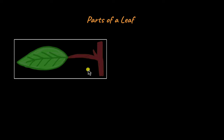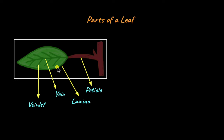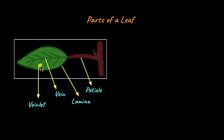This is how a typical leaf looks like. The main green part of the leaf is called the lamina or the leaf blade. This is green in colour and is the site of photosynthesis. The lamina is held up by the petiole, and the lamina has several lines running through it. The main big line is called the vein, and the smaller lines that emerge from the vein are called veinlets. Veins and veinlets provide support to the leaf.